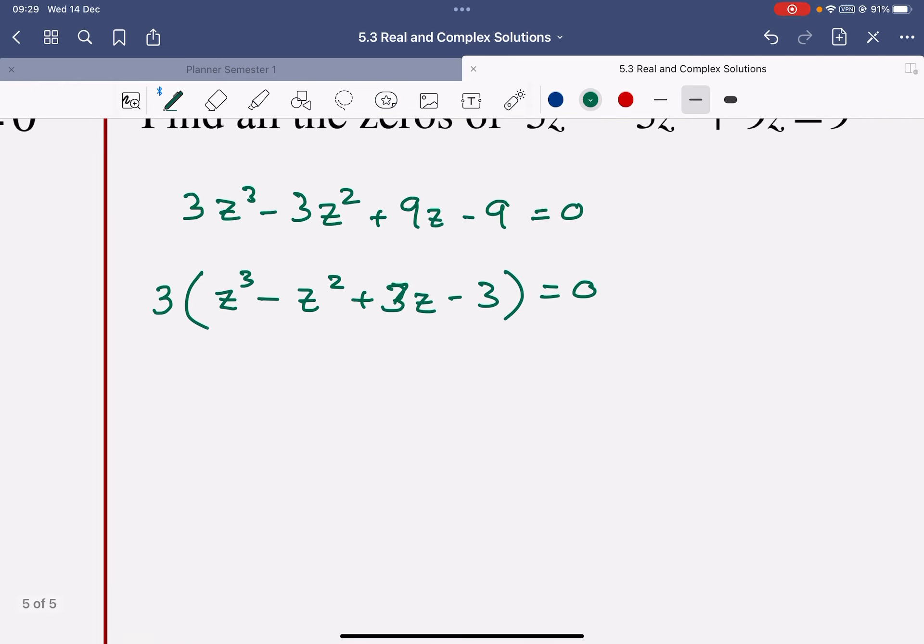3z minus 3. Now inside that bracket, in the first part, I can see z squared, z minus 1. And in the second part, I can see another factor of 3.